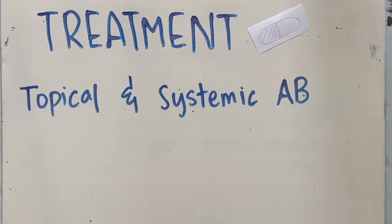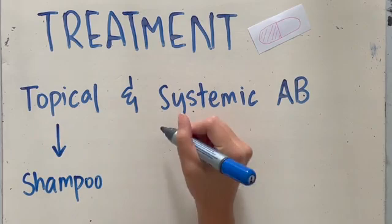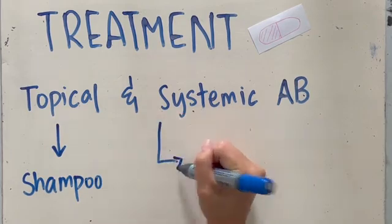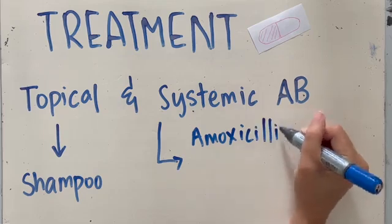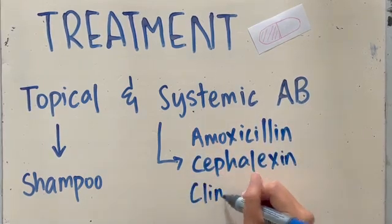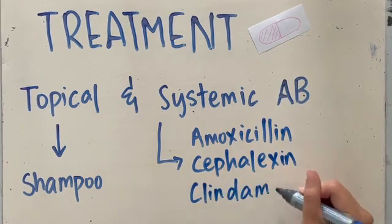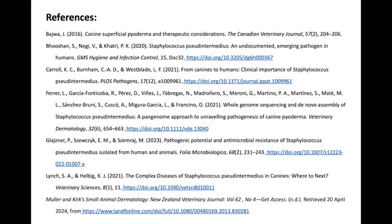Pyoderma is typically treated with a combination of topical and systemic antibiotic therapy for at least 3 to 4 weeks. However, severe cases may require prolonged therapy. Topical treatments include shampoos containing antiseptics such as chlorhexidine or benzoyl peroxide. Common antibiotics include amoxicillin, cephalexin, and clindamycin. It is also important to note that any underlying causes of staph infections must be identified and addressed. Abscesses should also be drained prior to antibiotic treatment to allow antibiotics to work effectively.